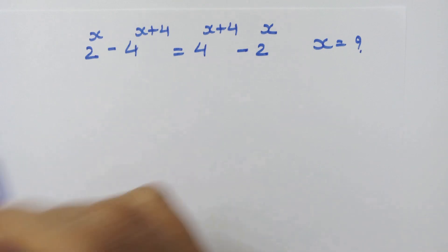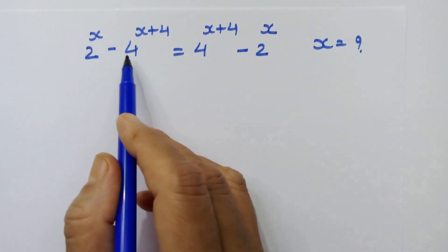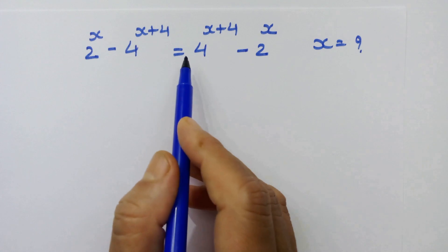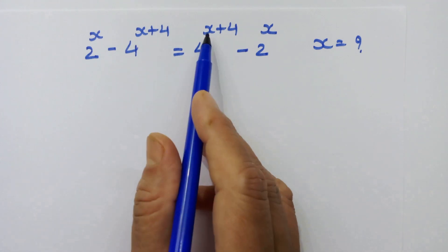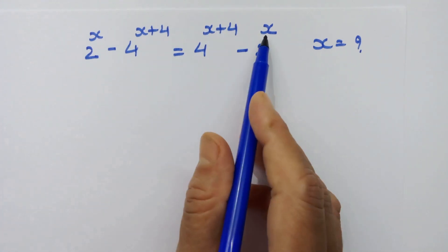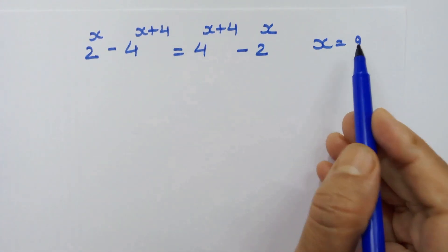Hello friends. Now here we have 2 raised to x minus 4 raised to x plus 4 is equal to 4 raised to x plus 4 minus 2 raised to x, and let's solve for x.